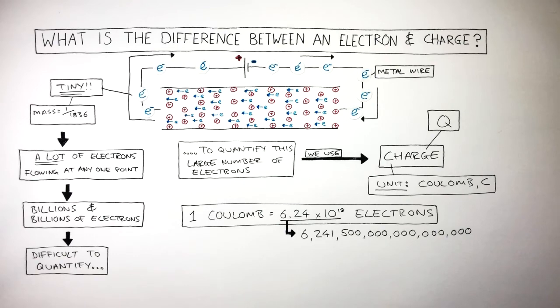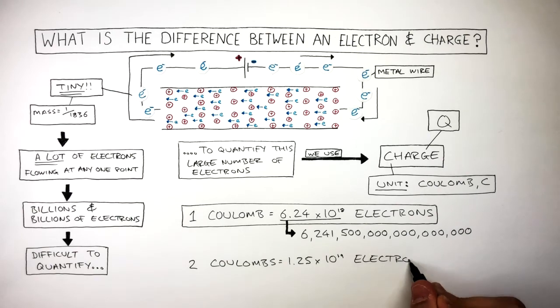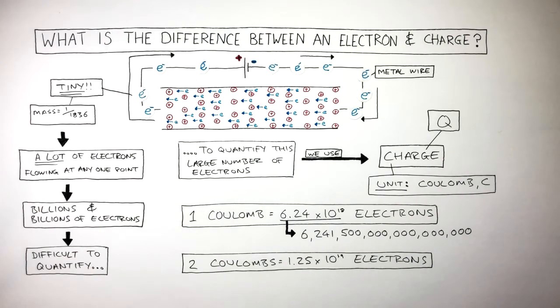So 2 coulombs is double the number of 1 coulomb. 2 coulombs is equal to 1.25 times 10 to the power of 19 electrons. The higher the unit of charge, i.e. coulomb, the more electrons there are.